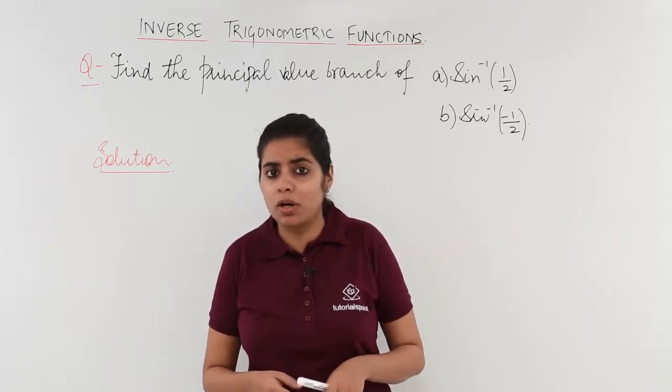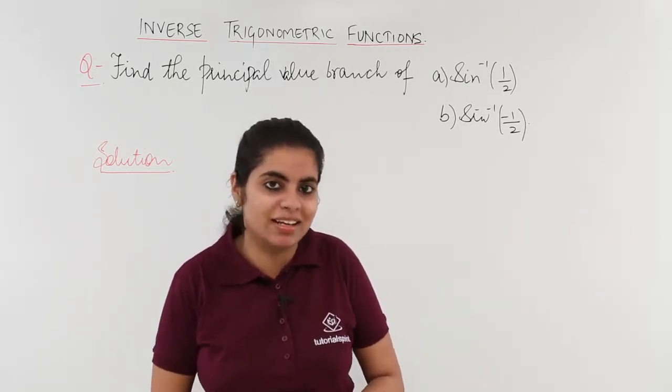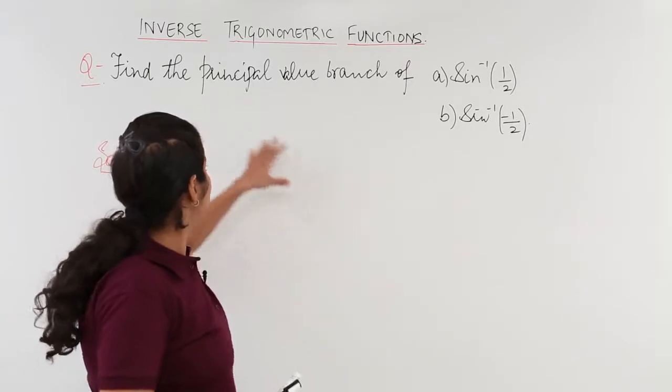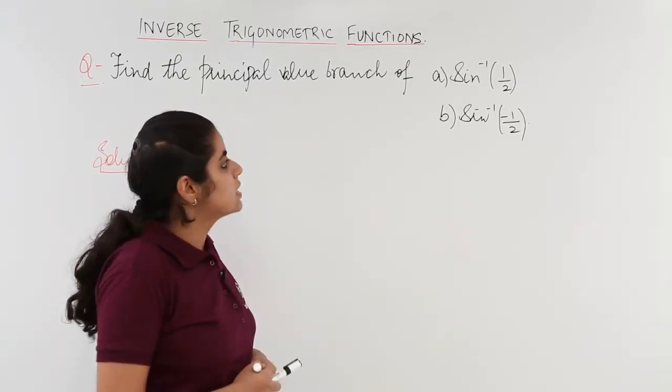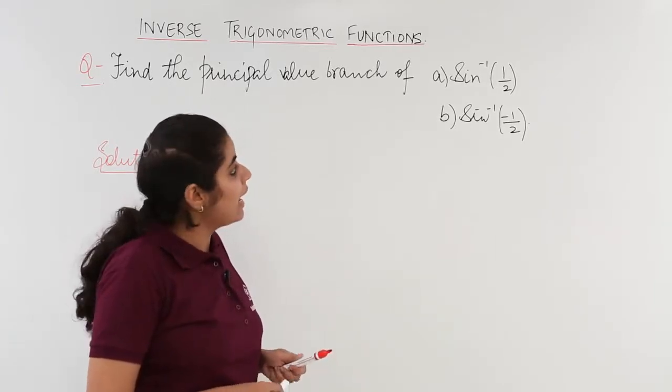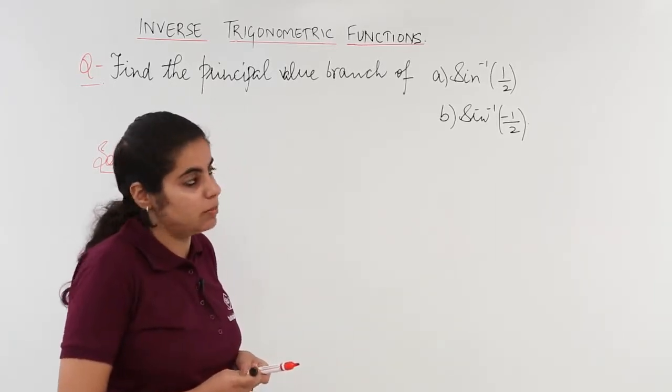This question is what? Let's see how to solve it. Let's understand. Let's read the question together. The question says find the principal value branch of two parts: sine inverse 1 by 2 and sine inverse minus 1 by 2.